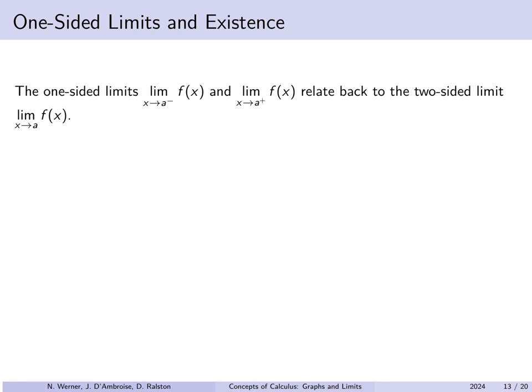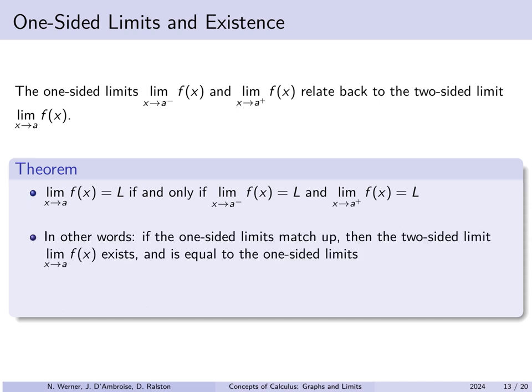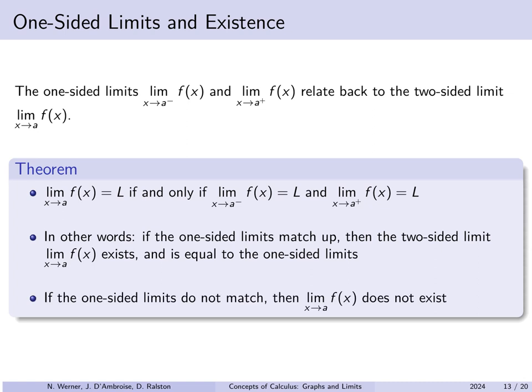The limit as x approaches 1 without distinction of left or right does not exist, because from one side it was approaching 3 and from the other minus 1. The one-sided limits relate back to the two-sided limit: the limit as x approaches a of f of x equals l if and only if both the limit from the left and from the right both equal the same number l. If the one-sided limits don't match, or one fails to exist, then the overall limit does not exist.